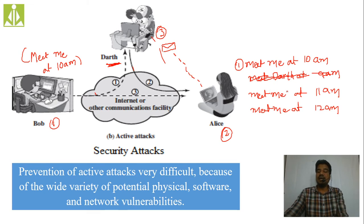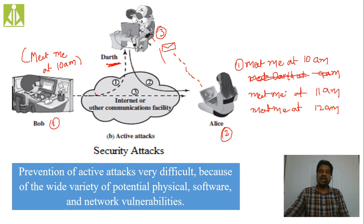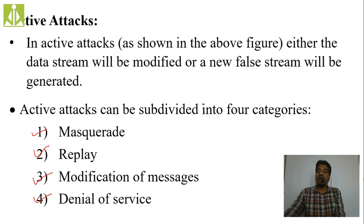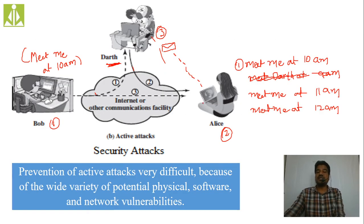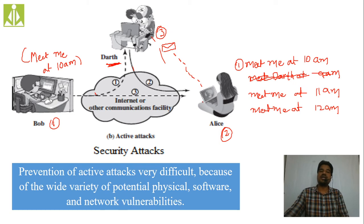The third type of active attack is modification of message. Here you consider arrows 1 and 2. Darth gains the actual message, modifies it, and sends only the modified message to Alice. Unlike replay, Alice does not receive the actual message at all — she only receives the altered message.